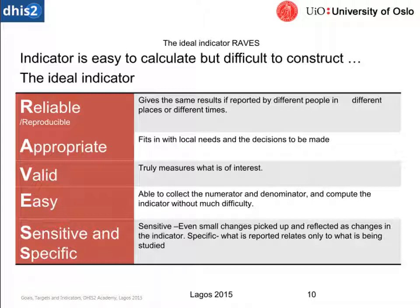Indicators are easy to calculate but difficult to construct. People spend their entire careers developing and building indicators, so I'm not going to go into all the specifics — every indicator is very different. We do know that all indicators should be reliable and reproducible, especially because then we can share that information across sectors and across different organizations, making sure that number is reproducible as well as reliable.